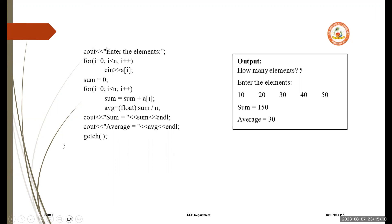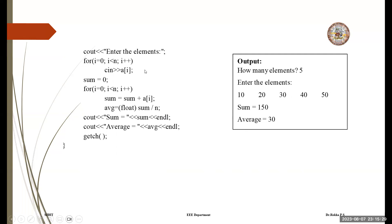For example, if the user enters size 5 and elements 10, 20, 30, 40, 50, then the sum is 150 and the average is 30. This is the expected output.